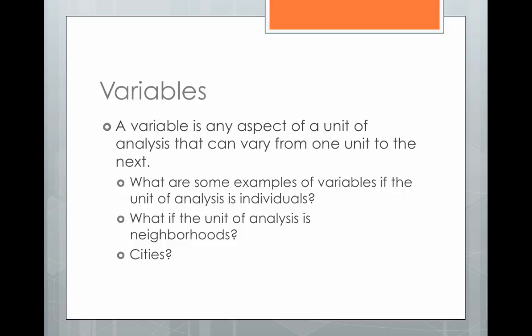In addition to units of analysis, we also have to identify variables. A variable is any aspect of a unit of analysis that can vary from one unit to the next — anything that can change. If the unit of analysis is individuals, what are some things that vary from person to person? Some examples are level of education, gender, age, and race. All of those things can vary from person to person.